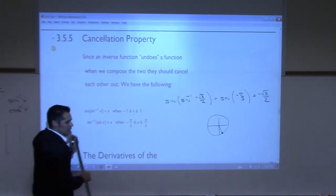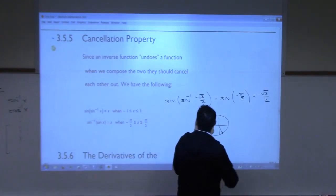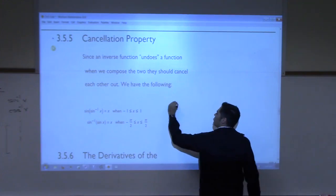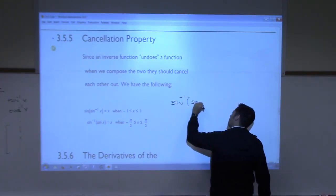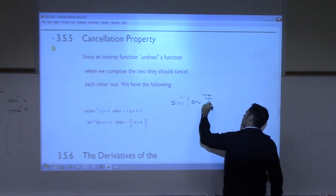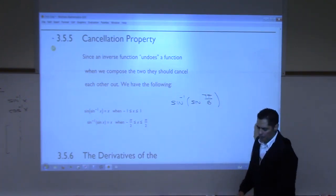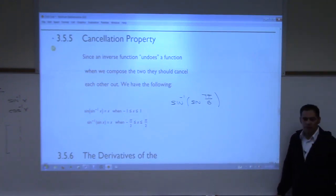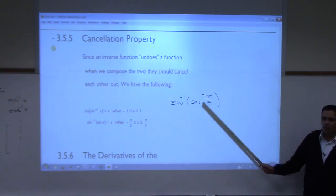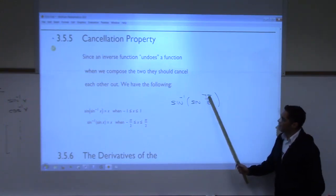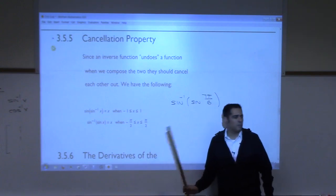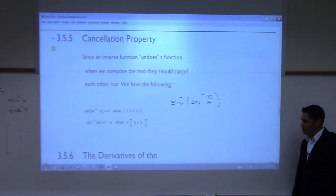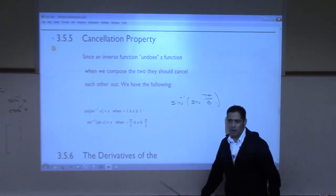Now let's see where we might run into a problem. What is arc sine of sine of 7 pi over 6? You might think the answer is 7 pi over 6 because they just cancel each other out. But is 7 pi over 6 between negative pi over 2 and pi over 2? It is not. So the answer is not 7 pi over 6.